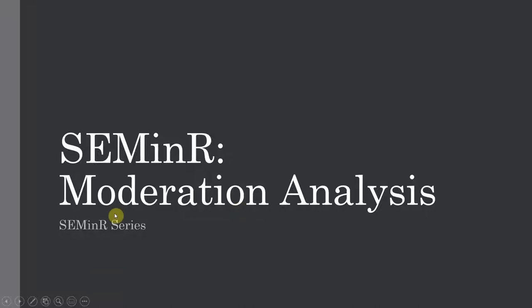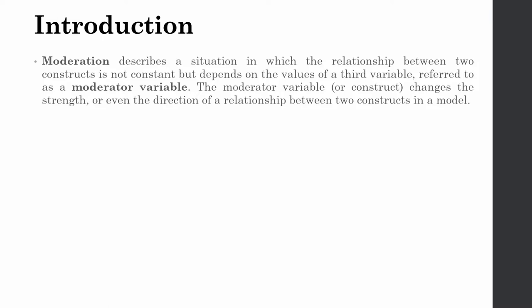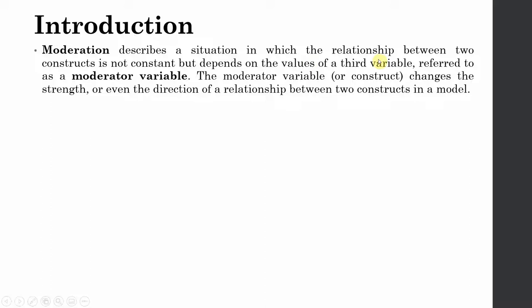In this session, we are going to focus on how to perform moderation analysis in R using seminr. Moderation describes a situation in which the relationship between two constructs is not constant but is actually dependent on the values of a third variable — the moderating variable. This moderating variable changes the strength or even the direction of the relationship; it may strengthen or weaken the relationship between two constructs.